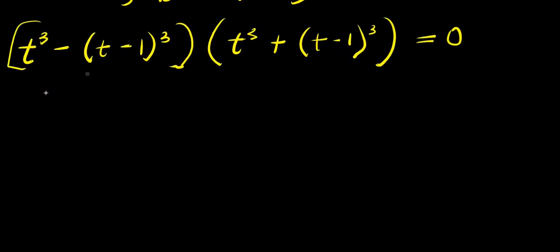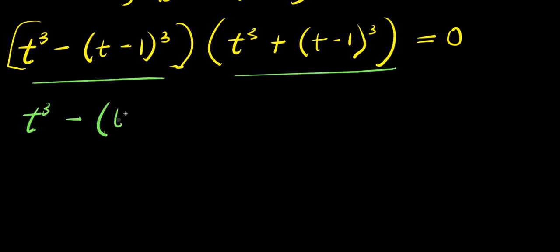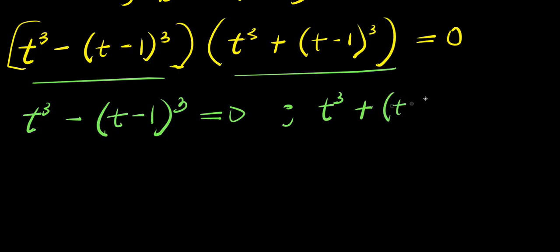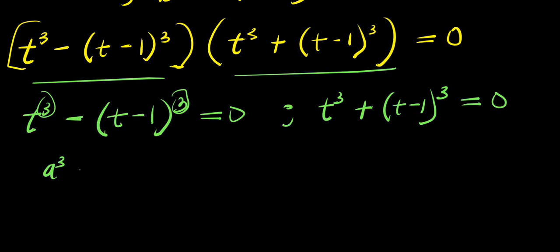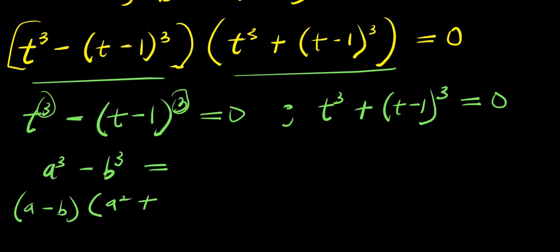So what we are going to do is equate each factor to 0. We have t³ minus (t minus 1)³ equals 0, and we also have t³ plus (t minus 1)³ equals 0. Now we have power 3 here and power 3 here with minus, so we expand using the identity: a³ minus b³ equals (a minus b)(a² plus ab plus b²).